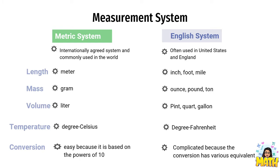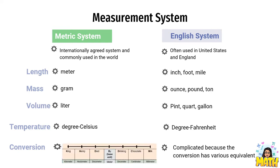In the previous video, I showed you how to convert the units in the metric system. These units are internationally agreed system and commonly used in the world. For length, we have the base unit meter. For mass, we have gram. For volume, liter. And for temperature, we have degree Celsius. Conversion of these units is easy because it is based on the powers of 10, and we can simply use this mnemonic device to better remember the order of the units from largest to smallest.